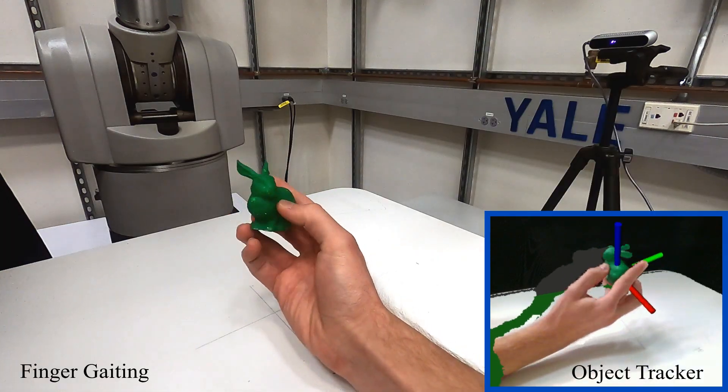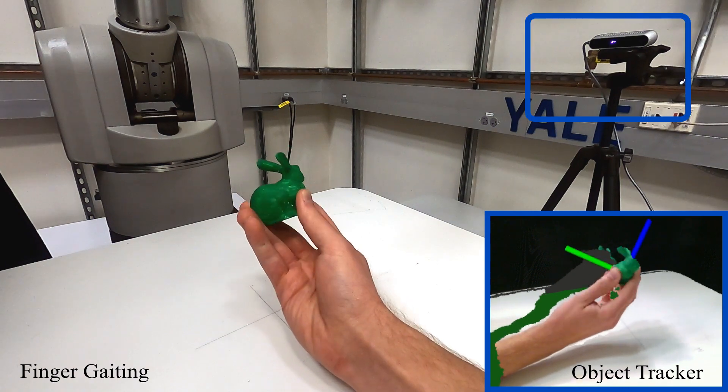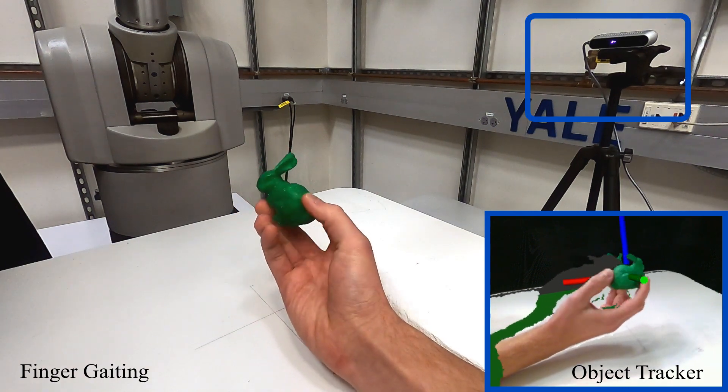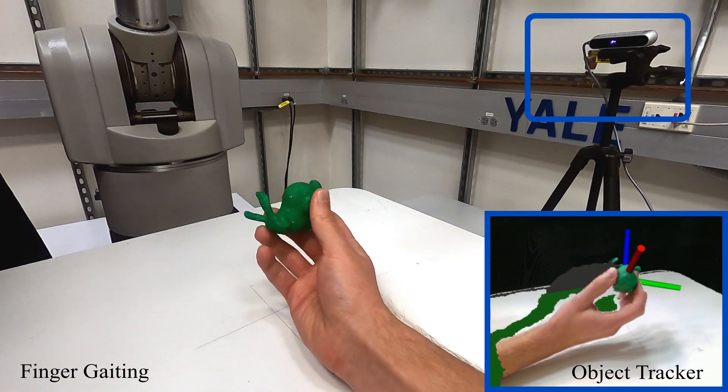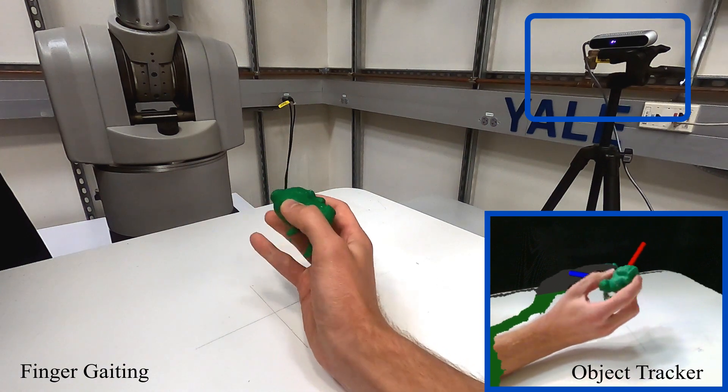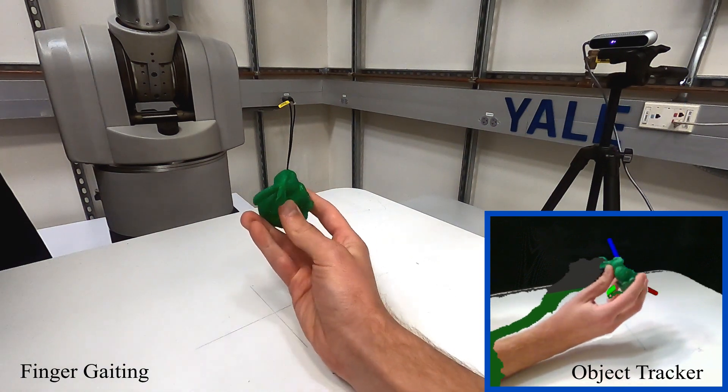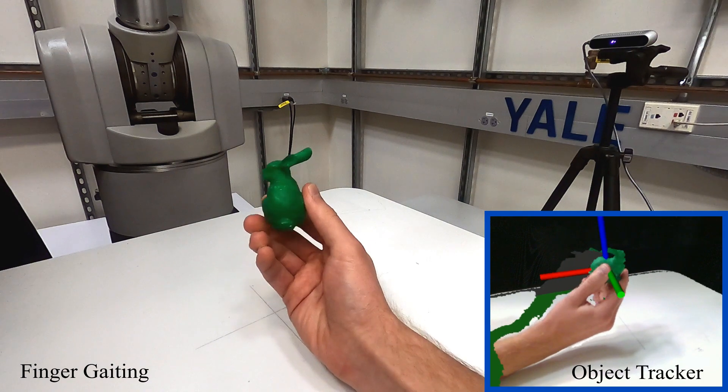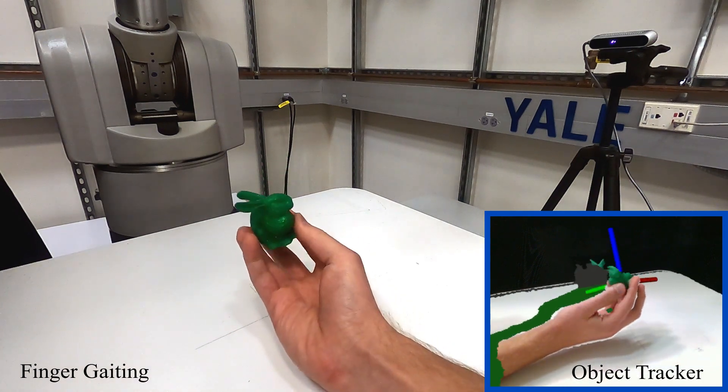From this approach, we provide a complete solution to this problem by fast online replanning via a low-latency 6D pose object tracker. The tracker utilizes RGBD data from an external camera calibrated to the robot's environment and is robust to occlusions associated with finger gating.